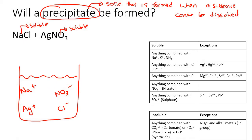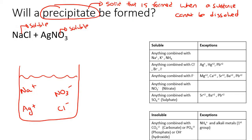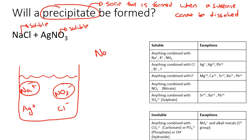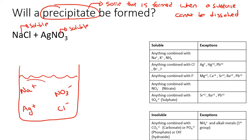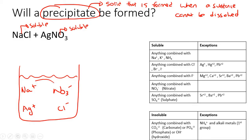Now you need to look at the opposite ions — positives attract negatives. We know that Na⁺ and Cl⁻ going back together won't stick because they're soluble — the water will just pull them apart. And if Na⁺ and NO3⁻ combine to form NaNO3, anything combined with Na is soluble, so the water will just separate them again.